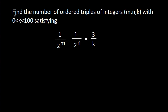In this video, we have to find the number of ordered triples of integers m, n, and k with 0 less than k less than 100, satisfying 1 over 2^m minus 1 over 2^n equals 3 over k.